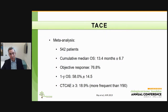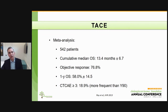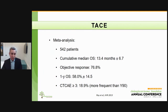The most definitive data we have is the meta-analysis of 542 patients published by Ray et al. in JVIR 2013, showing a cumulative median overall survival of 13.4 months, an objective response rate of approximately 77 percent — which is very good — and a one-year overall survival rate of approximately 58 percent. Major complications CTCAE grade three or higher were reported in 18.9 percent of patients. Compared to Y90, chemoembolization is generally less well tolerated in the first two weeks post-procedure, though the cost of Y90 is significantly higher than chemoembolization.